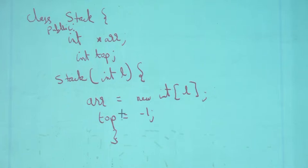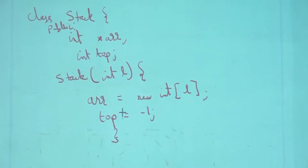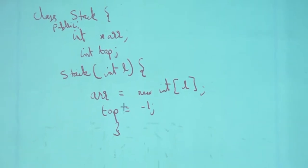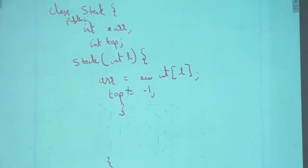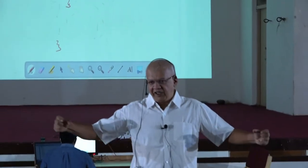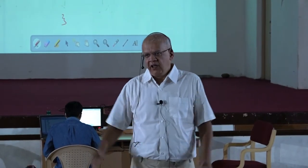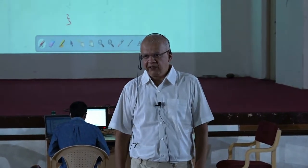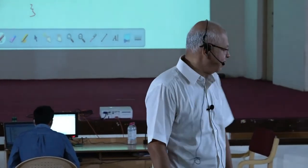Given this constructor, which takes L as a parameter — an estimate of the length — allocates an array to hold that many integers, and sets top equal to minus one, top is used to keep track of the top of the stack, just like the head pointer in case of a linked list.